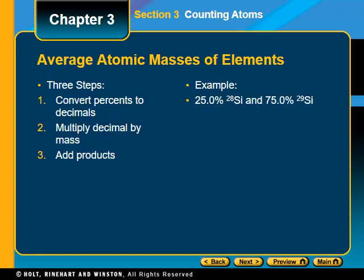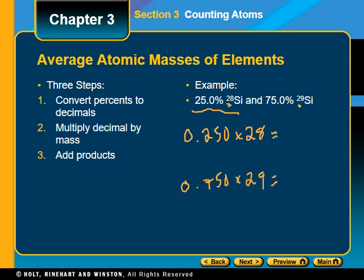Let's do an example using those three steps. Convert the percents to decimals: 25% becomes 0.250 and 75% becomes 0.750. Then multiply by the mass — this isotope has mass 28 and the other has mass 29, so 0.250 × 28 and 0.750 × 29. Using three significant figures, those give 7.00 and 21.8 respectively. Finally, add the products: 7.00 + 21.8 = 28.8 AMU.